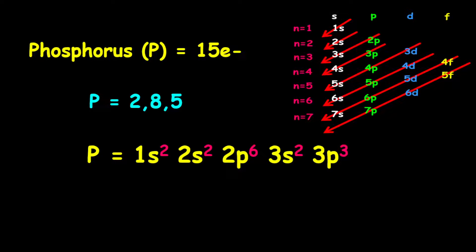For the shorthand electron configuration, it is given as neon, which represents the inner shells of phosphorus, followed by 3s2, then 3p3.